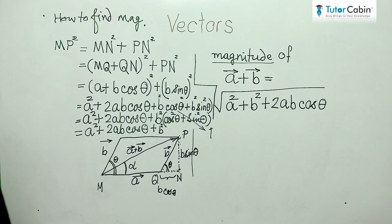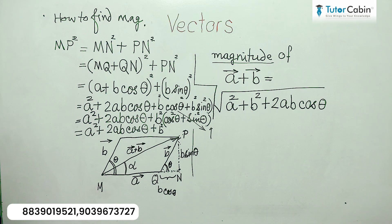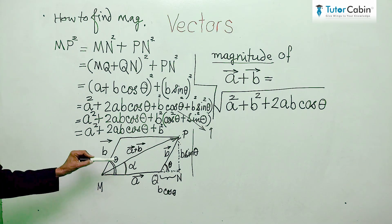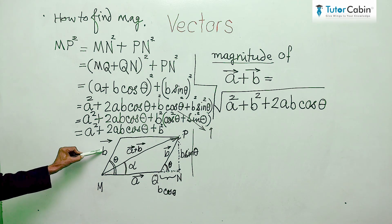Now, we try to find out the magnitude of the resultant vector. This is the resultant vector which is the result of addition of A vector and B vector.